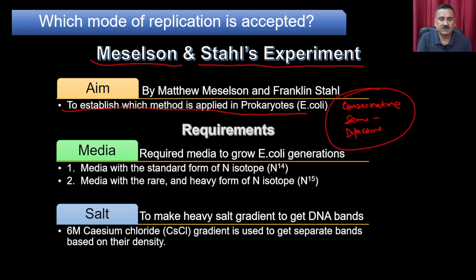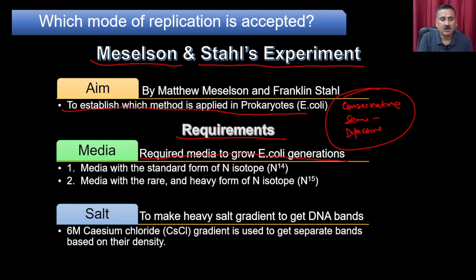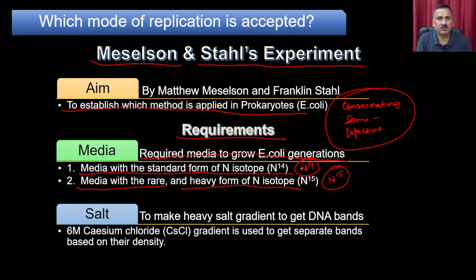For the Meselson-Stahl experiment, they required media to grow E. coli for several generations. Two types of media were used: one with the standard form of nitrogen, N14 (normal nitrogen), and one with the rare and heavy form of nitrogen, N15. These are two different isotopes. They also required analytical techniques — specifically a cesium chloride density gradient — to separate DNA formed with N14 versus N15, since the two have different densities.